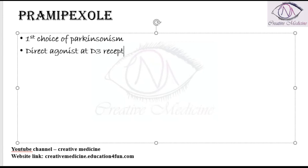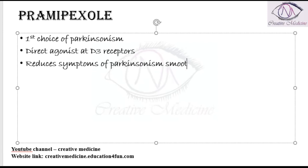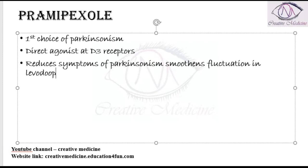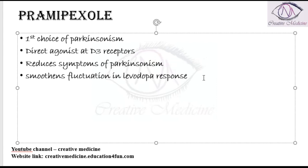It acts on D3 receptors and is the first choice for Parkinsonism. It reduces the symptoms of Parkinsonism and smoothens the fluctuations which are seen due to Levodopa and Carbidopa. Pramipexole reduces the fluctuations caused by Levodopa response, and as a result, it is also effective for the on-off phenomenon.